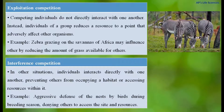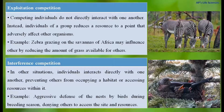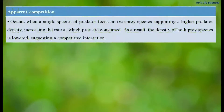Another type is interference competition, in which individuals interact directly with one another, preventing others from occupying a habitat or accessing resources. For example, aggressive defense of the nest by birds during the breeding season — most birds aggressively defend their territory and nest from other birds or species, denying their access to the site and its resources.